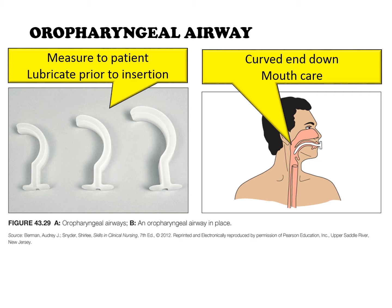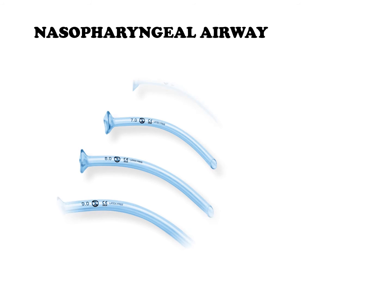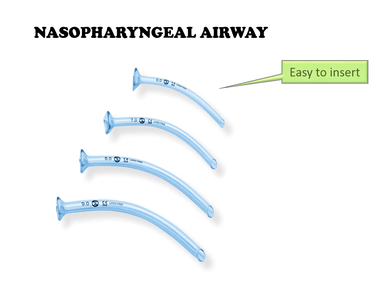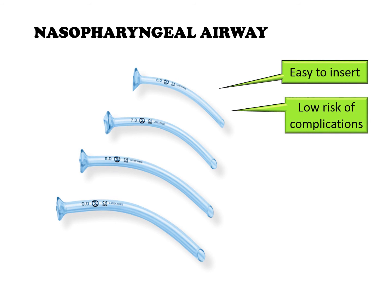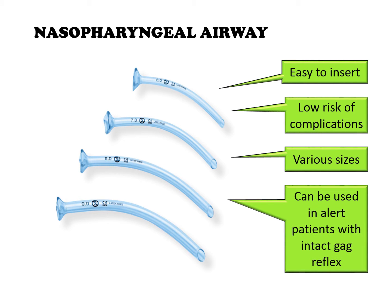Frequent mouth care is necessary and suction should be readily available at the patient's bedside. A nasopharyngeal airway is another device used to maintain airway patency. It is easy to insert, has a relatively low risk of complications, comes in various sizes, and is used for patients who are alert as it does not trigger the gag reflex.